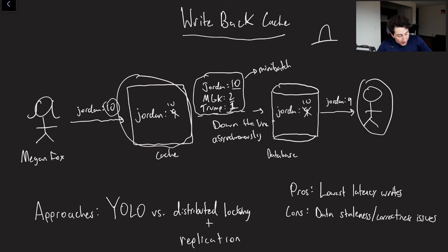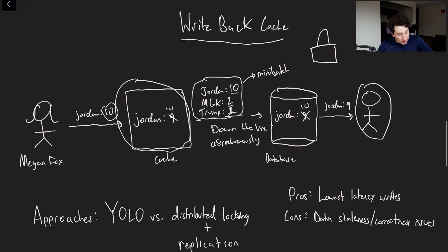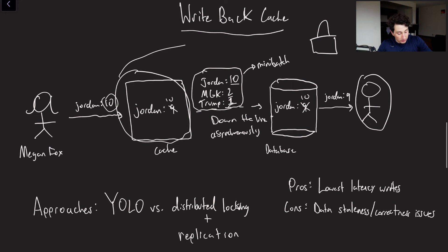So what could we do if we really needed to have consistent data here? Well, we could have something like a distributed locking service. So whenever we wrote to the cache, what we would also have to do is grab the distributed lock and say Jordan is grabbed. And effectively, as long as the write-back cache has the value Jordan and hasn't yet written it back to the database, it's going to stay this way.